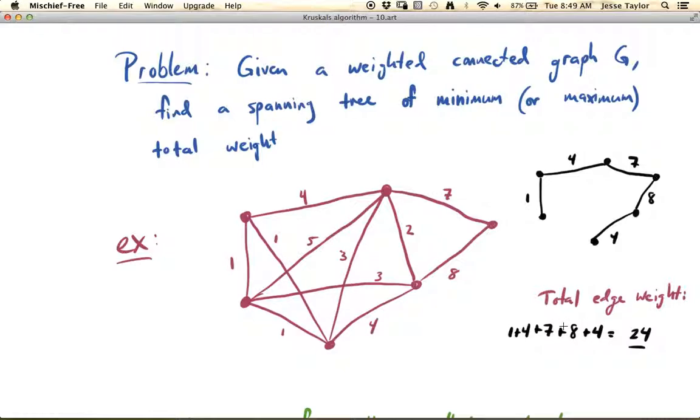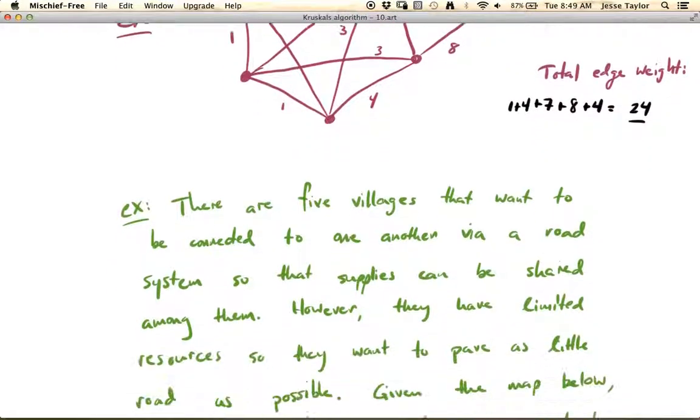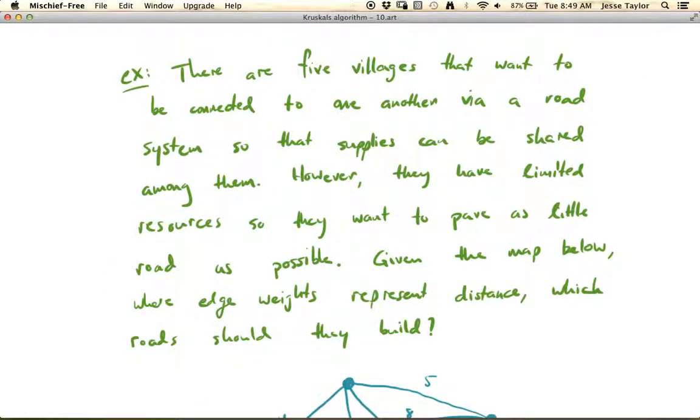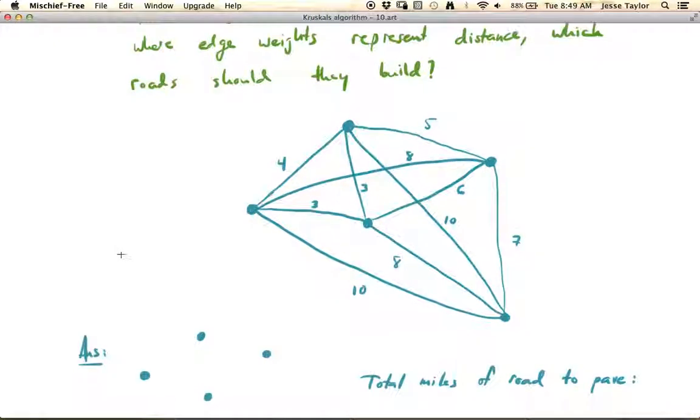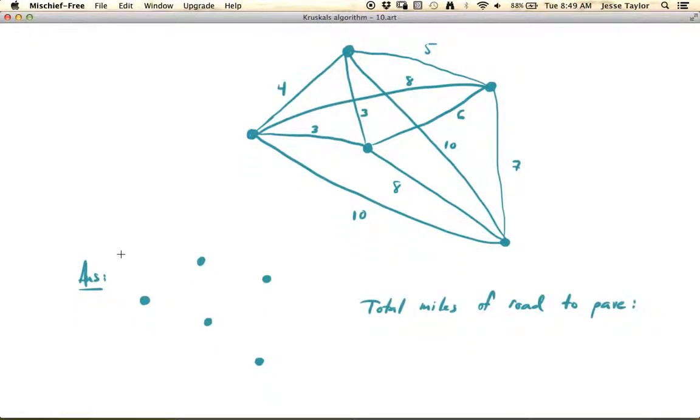So to give you a little bit of context for why you might be interested in doing that, let's look at this block of text. There are 5 villages, and they want to be connected to each other via some road system so that they can share supplies. But they have limited resources, so they don't want to just build roads between every single possible city. They want to pave as little road as possible. Given the map below where the edge weights represent distance, which road should they build?